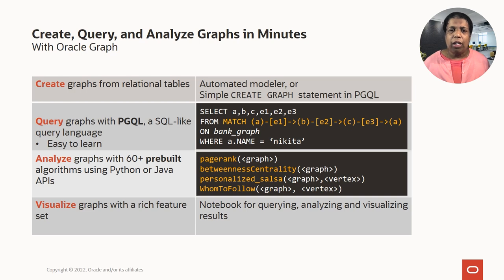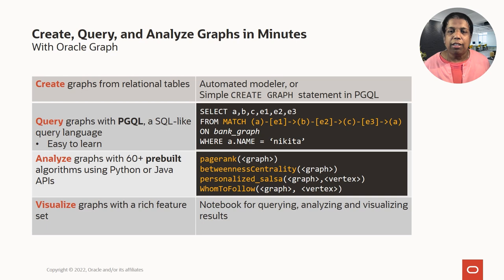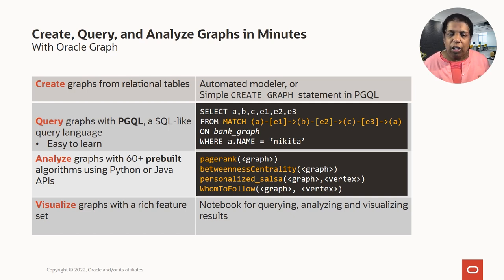When using Oracle Graph, you can create a graph from relational tables using the automated modeling tool in Autonomous Database. You can query a graph with PGQL, a SQL-like graph query language that has SELECT, FROM, and WHERE clauses, plus a MATCH clause to specify a graph pattern — such as a three-hop cycle. You can analyze your graph using algorithms like PageRank and betweenness centrality for importance, whom-to-follow for clusters, and more. Over 60 such algorithms are available in Oracle Graph, invokable via a simple API call in Python or Java. Visualization tools help you visualize the graph and intermediate results.